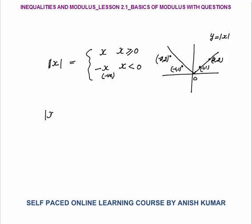The value of mod x will remain always positive. Now, how to open mod of x minus a? Similar to mod x: it equals x minus a whenever x minus a is greater than or equal to 0, and its value is minus of x minus a whenever x minus a is less than 0.